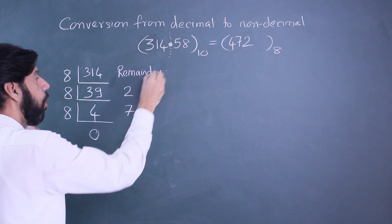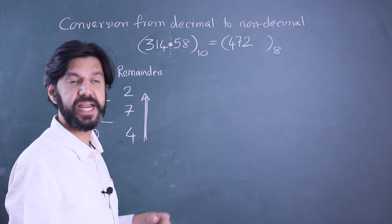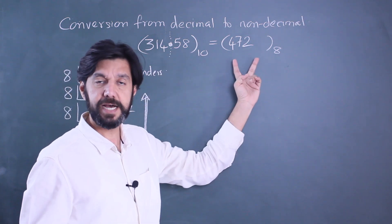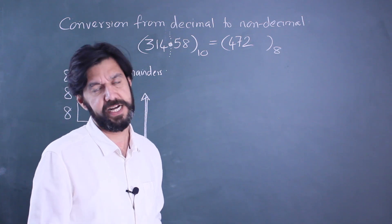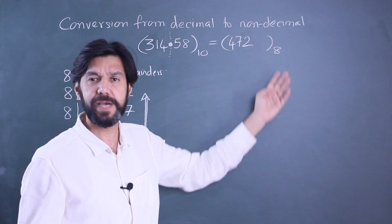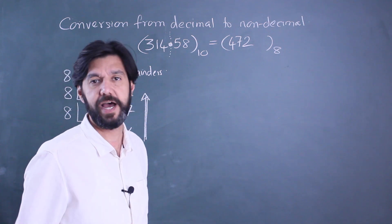If you notice, when I divide by 8 the remainders will always be less than 8. So when you're converting that number you'll never get a digit 8 or more, and that is obviously expected because in base 8 you won't have a digit 8 or higher.